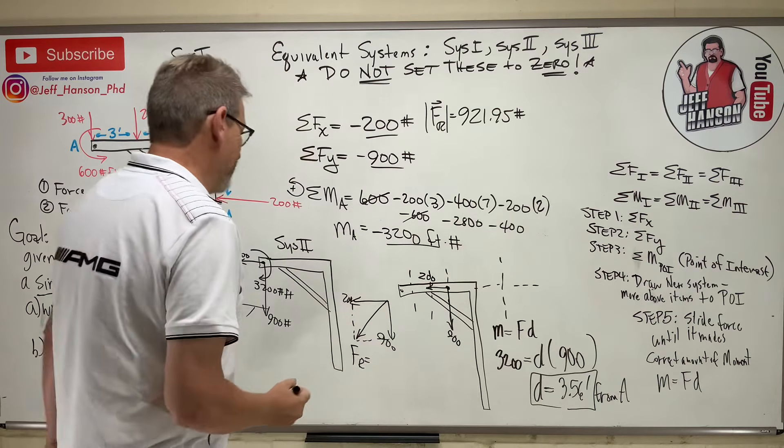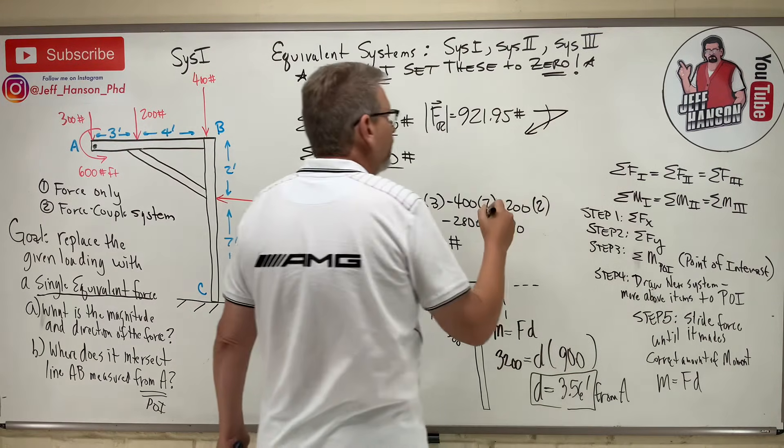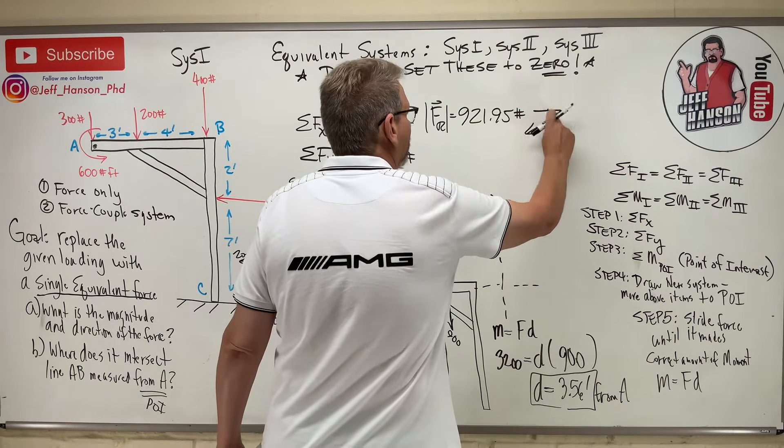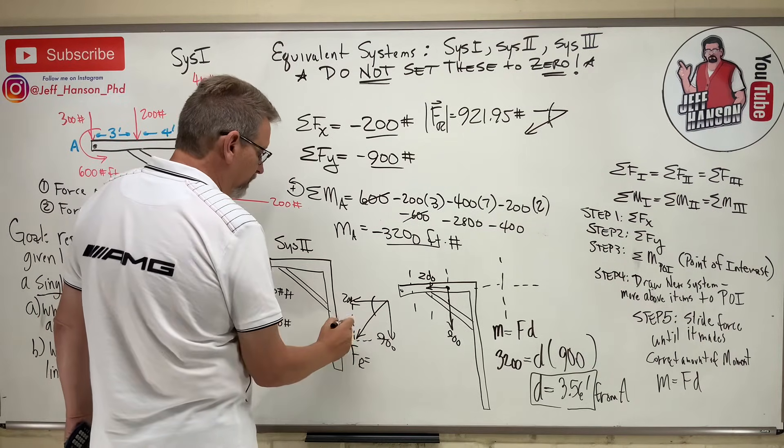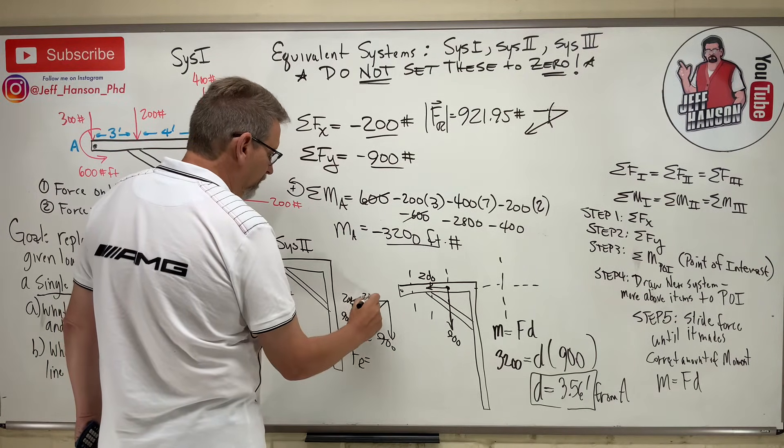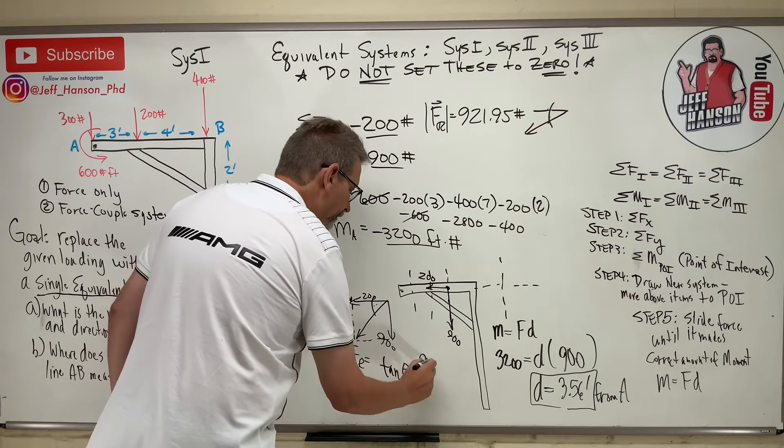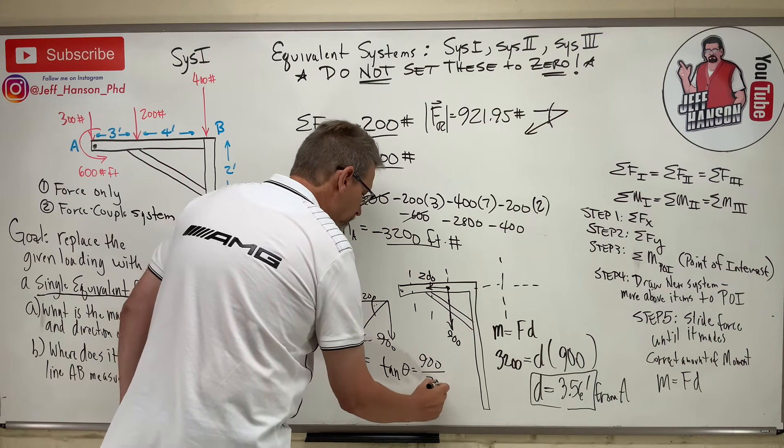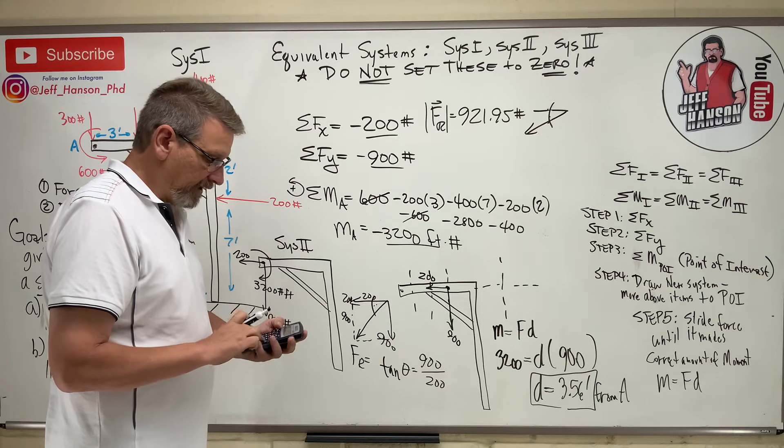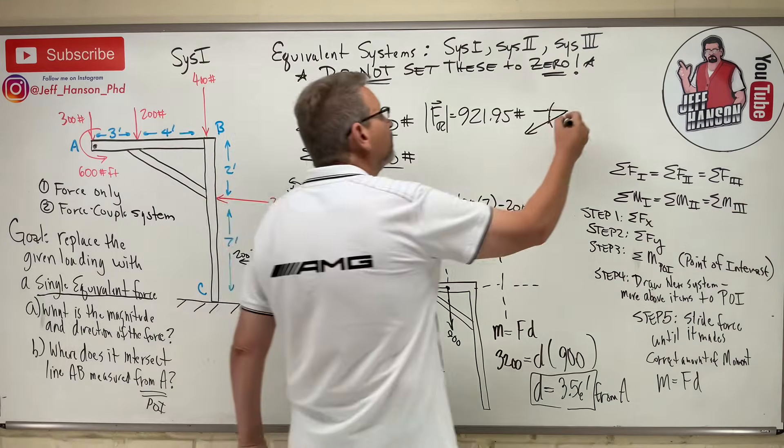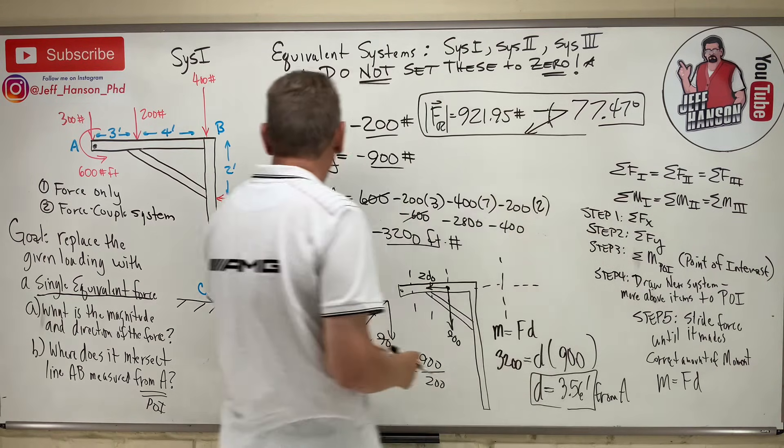At what angle? And you could write this 100 different ways. I think the way I'll write it is this. Got my thing going backwards. That's okay. So, that's this angle right here. Well, if that's 900, then this is 900, and this is 200 up here. So, that angle is, I can just use tan. Tan theta equals opposite over adjacent. So, 900 divided by 200 equals inverse tan of that is 77.472.